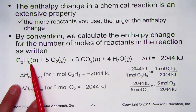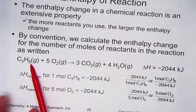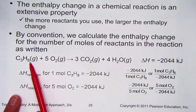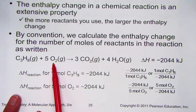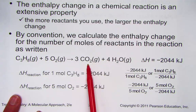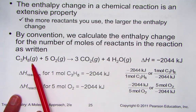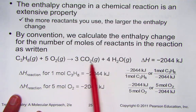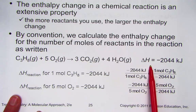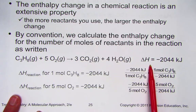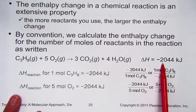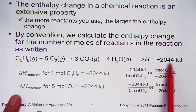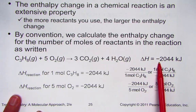C₃H₈ is a molecule known as propane. We often use propane in gas grills at home, or some people heat their homes with propane. When it combusts, it reacts with oxygen from the air, forming carbon dioxide gas and water vapor. The delta H, the enthalpy of reaction, is negative 2044 kilojoules of energy. The negative sign shows it is exothermic.